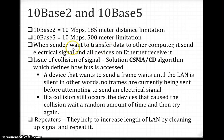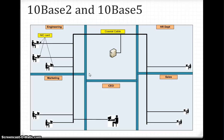When a sender wants to transfer data to another computer, it sends an electrical signal and all devices on the Ethernet receive it. If one person is sending data and at the same time another person is also sending data, a collision can happen on the cable.